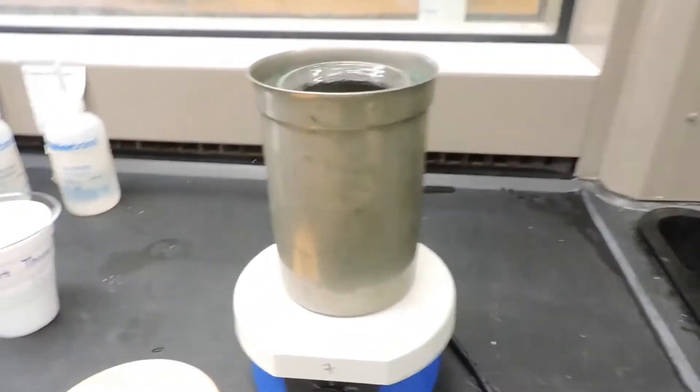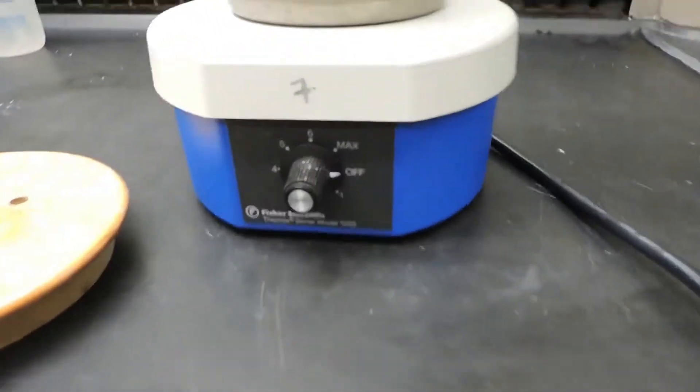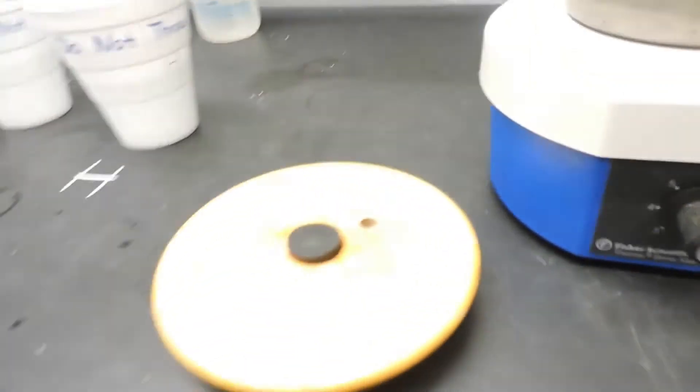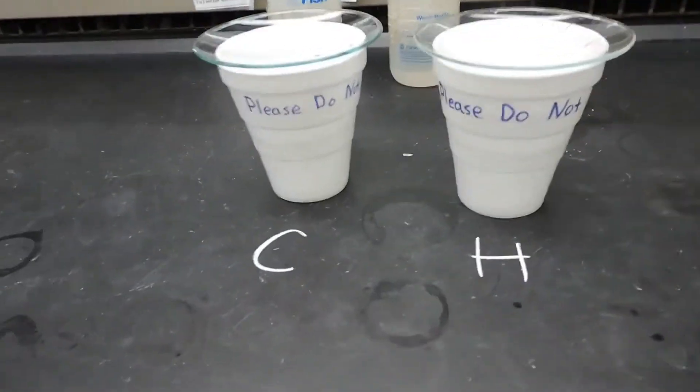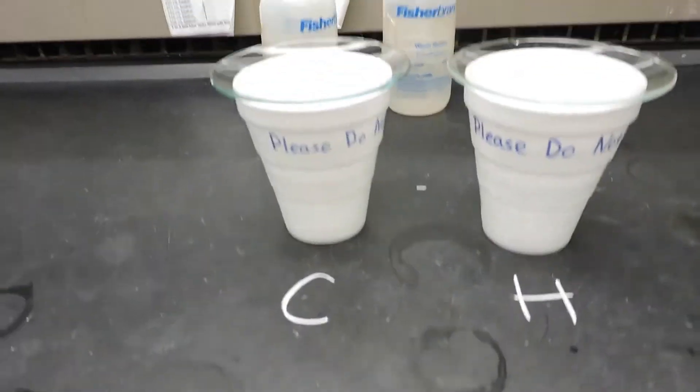On the inside is a stir bar. We have it positioned on a stir plate, and the top is pretty much sealed. It has a rubber gasket here, and there's a hole to put in a temperature probe, which we have here. We also have two styrofoam cups set up. One has cold water and one has hot water.